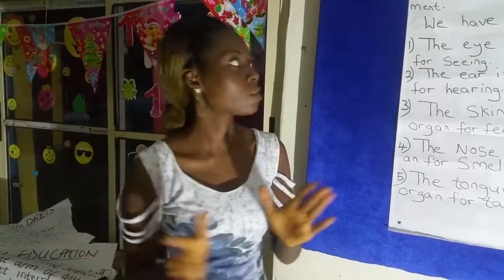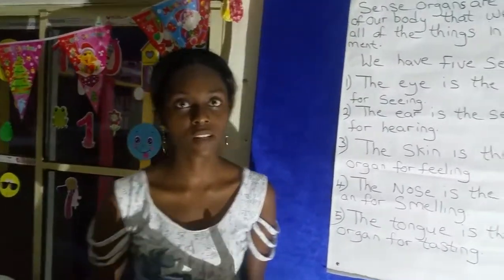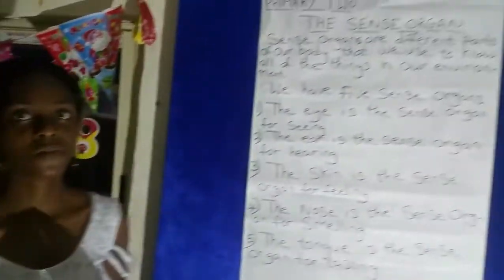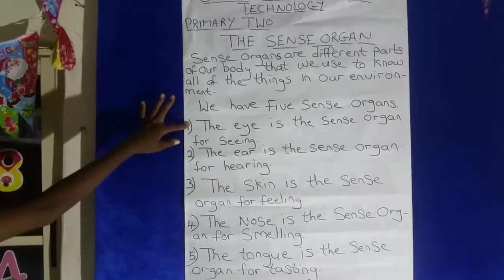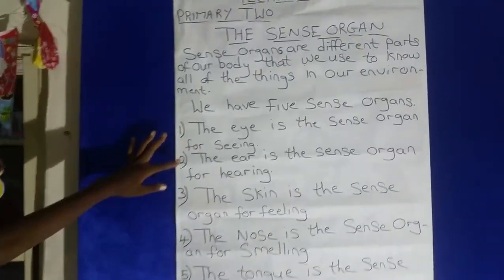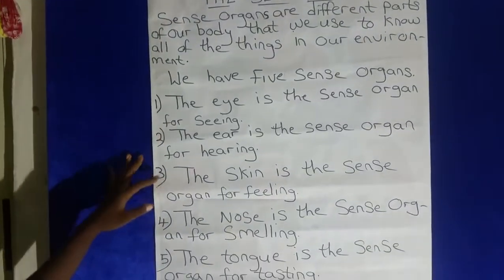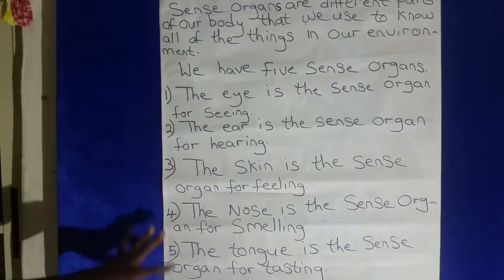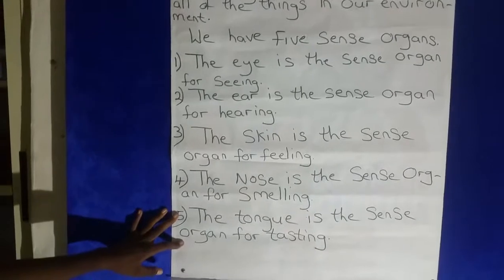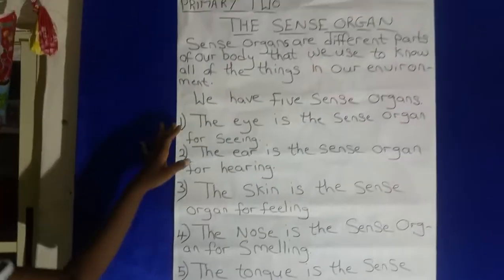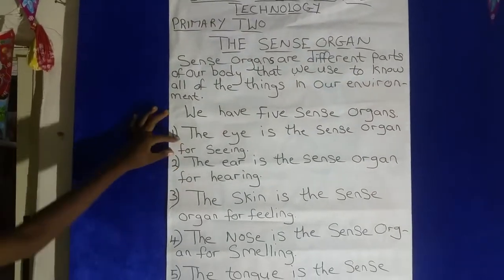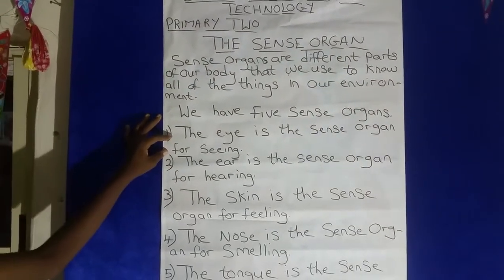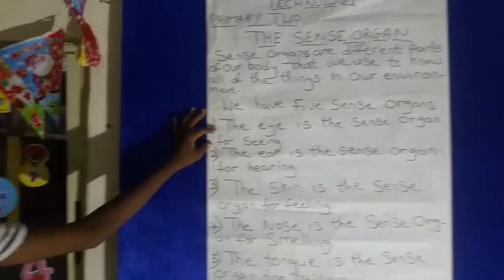They are the five sense organs. Now, what are the functions of these five sense organs? We have the eye, the ear, the skin, the nose, and the tongue. The first one is the eye — what is the eye used for? The eye is the sense organ for seeing, for sight.